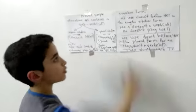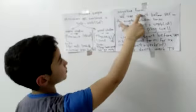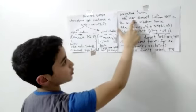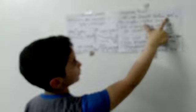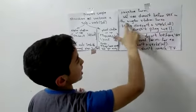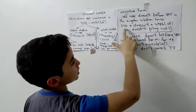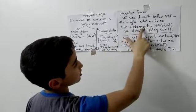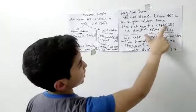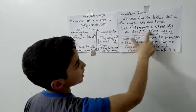The present simple negative form. We use doesn't before verb in the singular situation. For example, he doesn't. He doesn't plus verb infinitive. He doesn't play well.